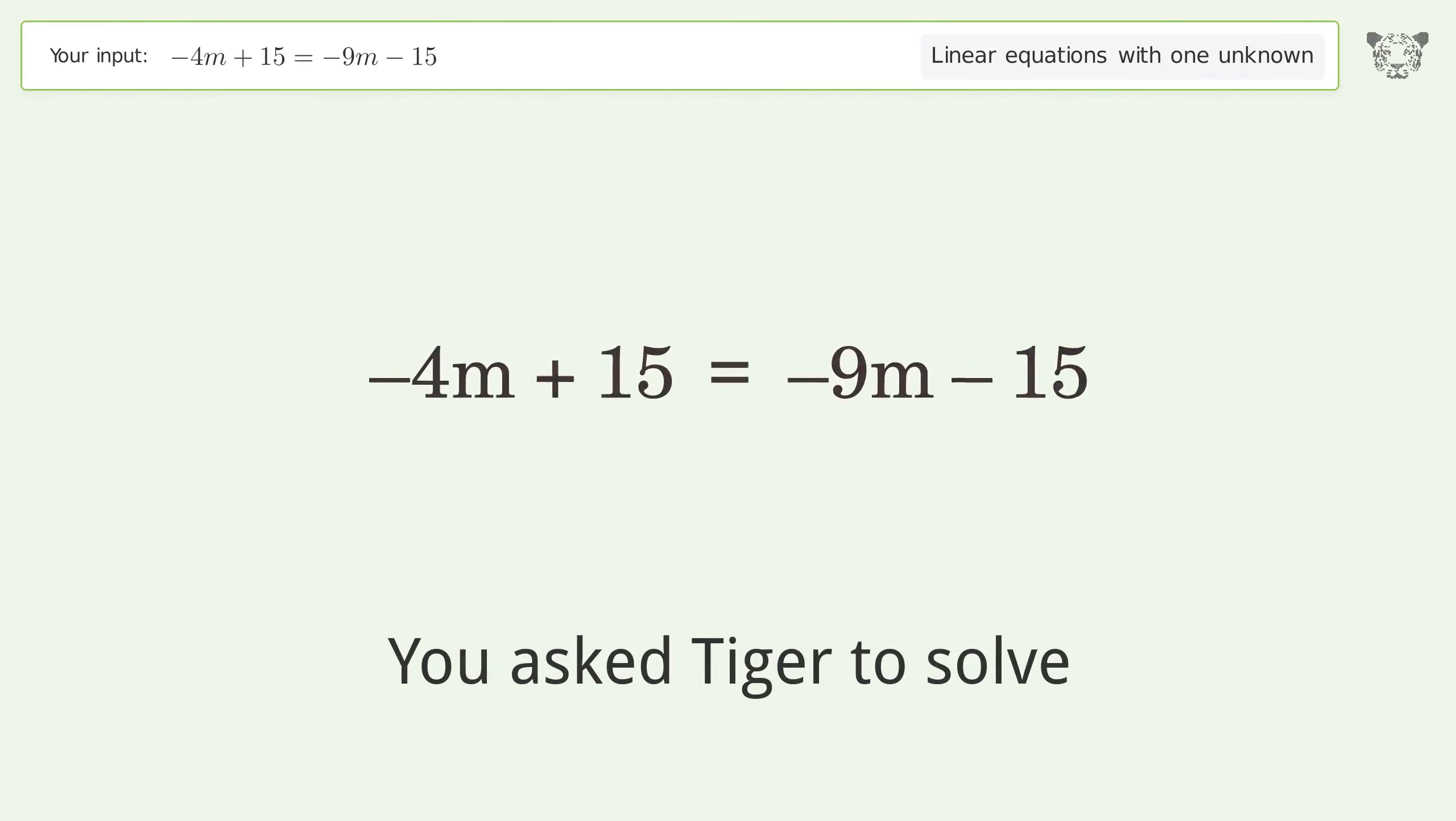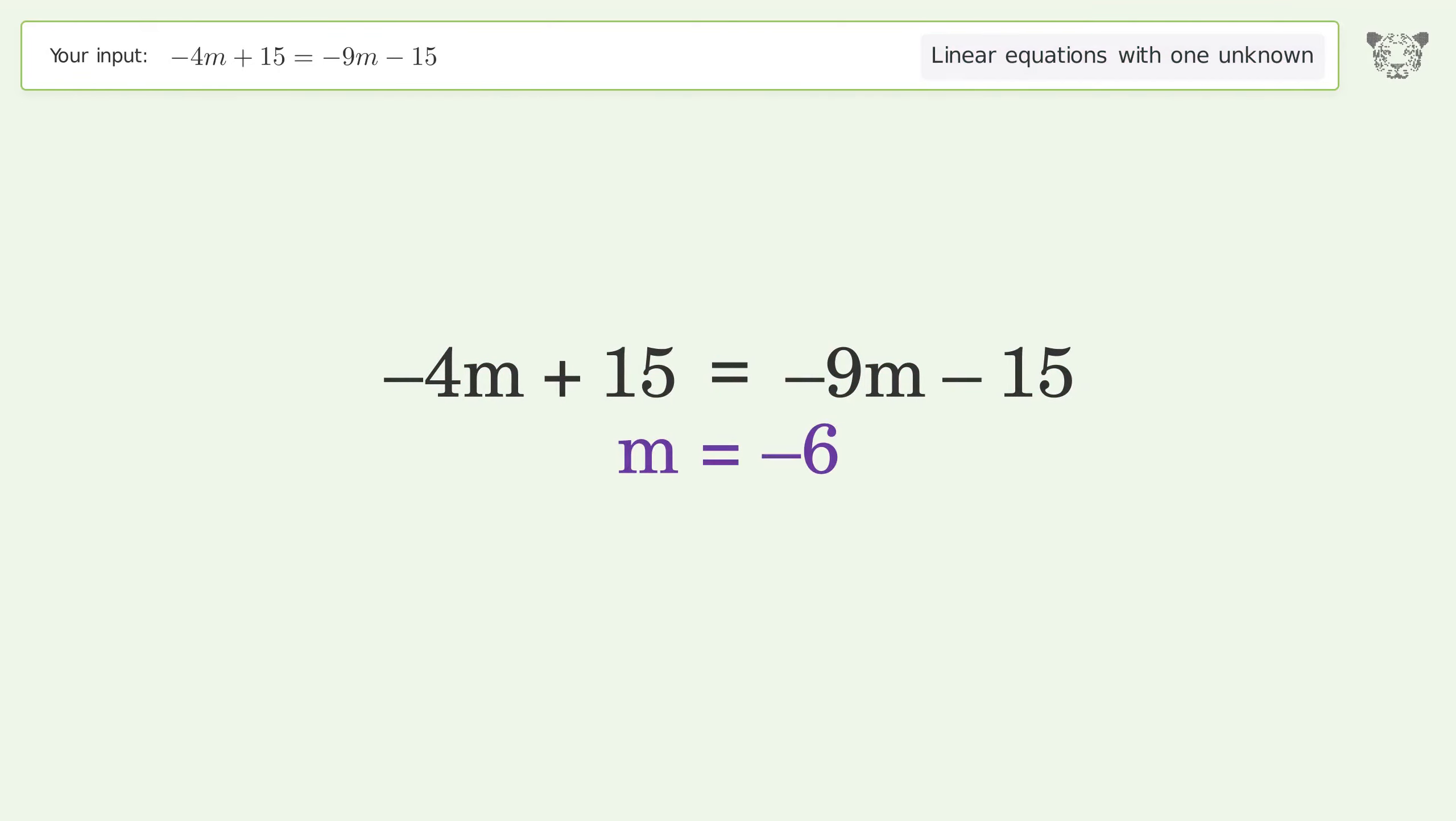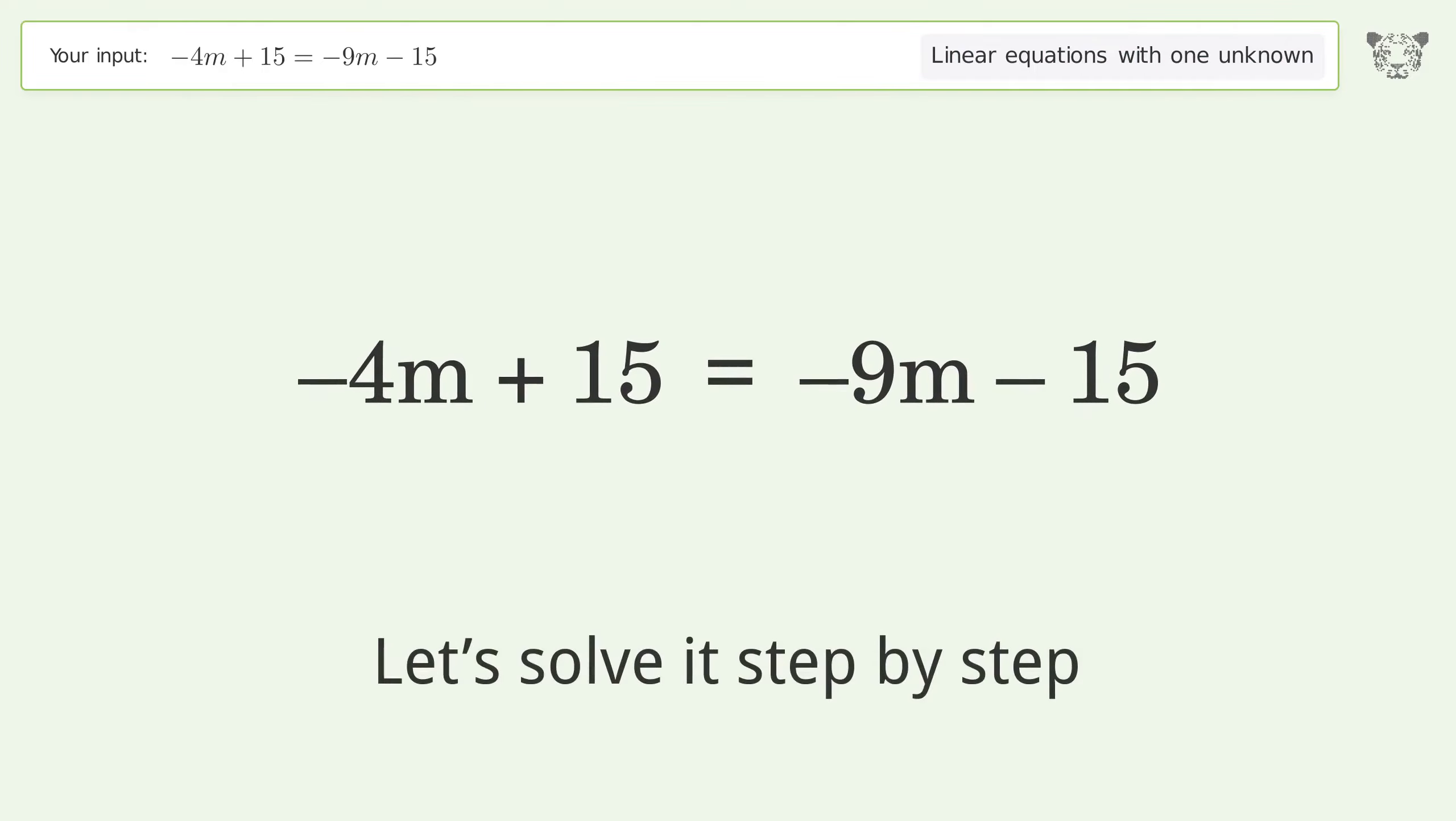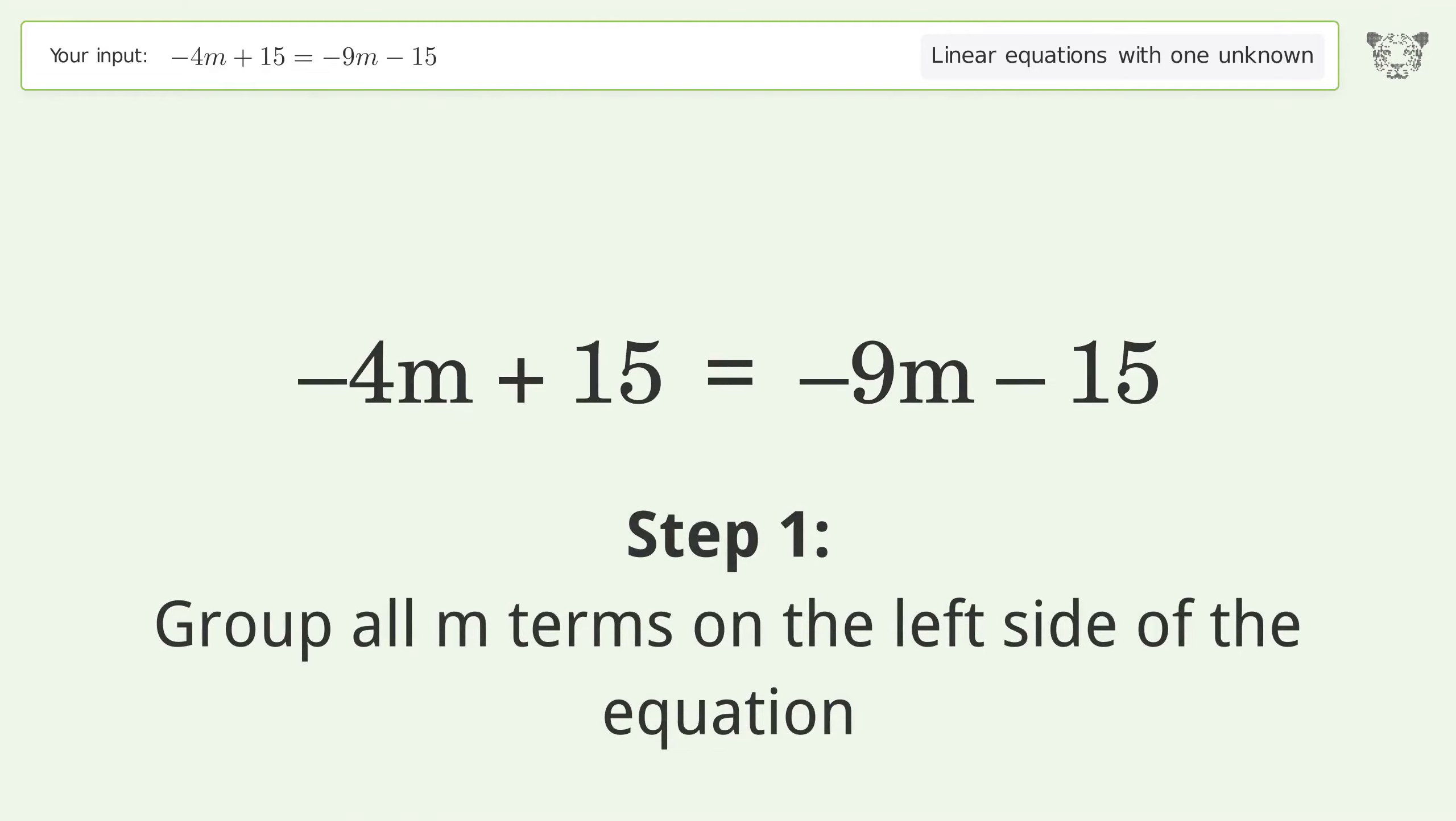You asked Tiger to solve this. This deals with linear equations with one unknown. The final result is m equals negative 6. Let's solve it step by step. Group all m terms on the left side of the equation. Add 9m to both sides.